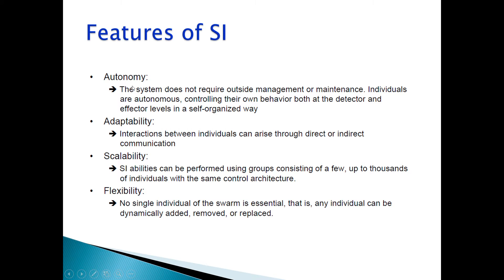Autonomy means no outside agent or outside management is needed — everybody is autonomous in itself. Next is adaptability: interactions between individuals can arise through direct or indirect communication. When relating this to insects, there is either direct communication or indirect communication through liquids they secrete while collecting food.